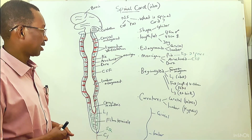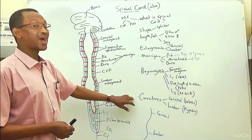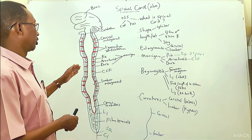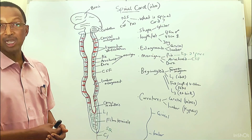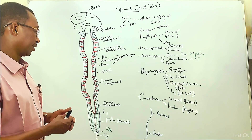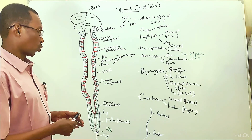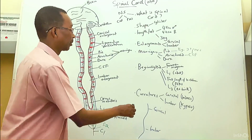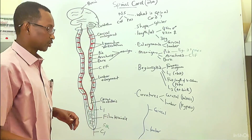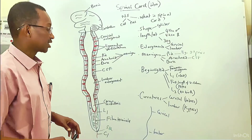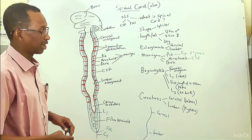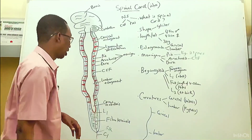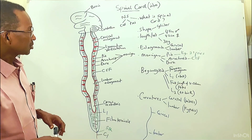The spinal cord also has curvatures that correspond to the curvatures of the vertebral column. There is a convexity of the spinal cord at the level of the cervical region — this is called the cervical lordosis. Similarly, there is a curvature at the lumbar region. So we have two curvatures: one at the cervical region and one at the lumbar region.